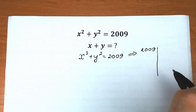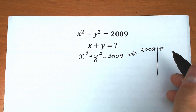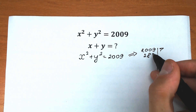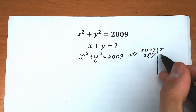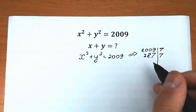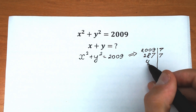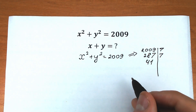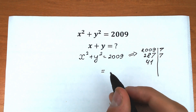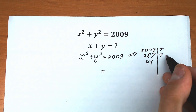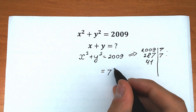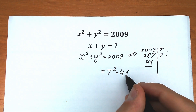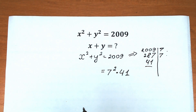Let's divide 2009 by 7. If we divide 2009 by 7 we get 287. Then let's divide 287 by 7, and we get 41. We can't divide 41 by 7, so this is our result. We can rewrite 2009 as 7² × 41.